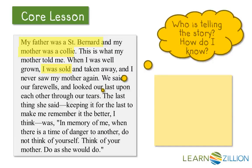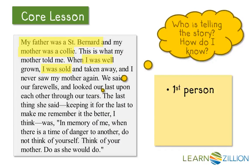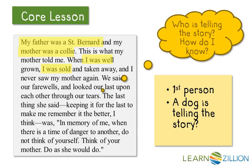I see the words 'I' and 'my father was a Saint Bernard' — the mother was also a collie. I see that this language is using 'I,' which gives me the idea that this is written in the first person from the main character's perspective. A Saint Bernard and a collie are both dogs, and this character talks about being sold, which makes me think a dog is telling the story.